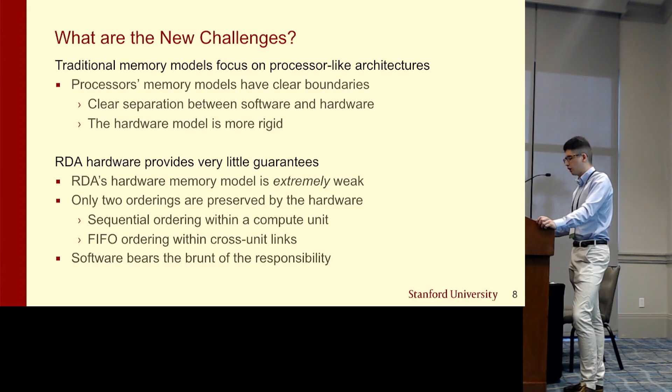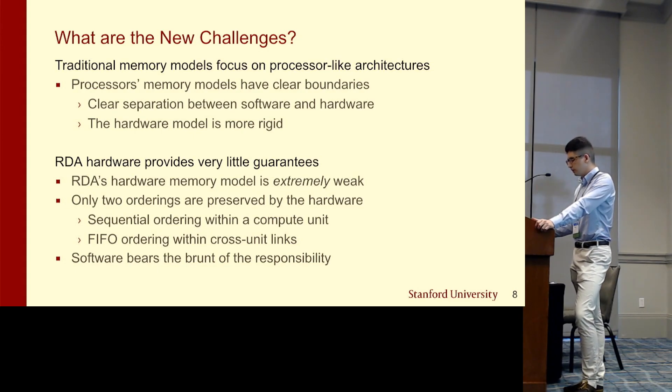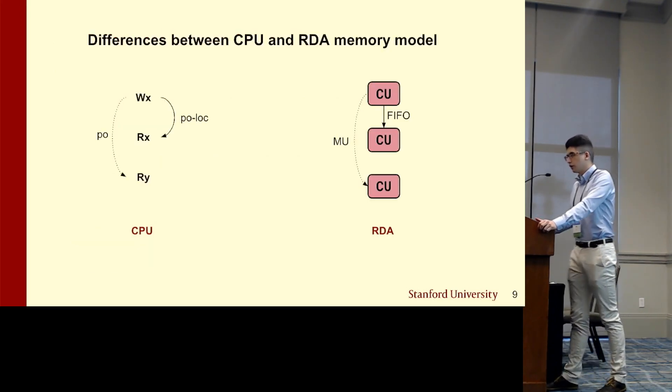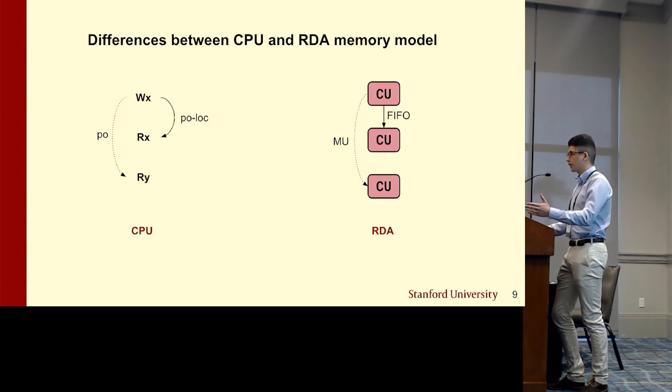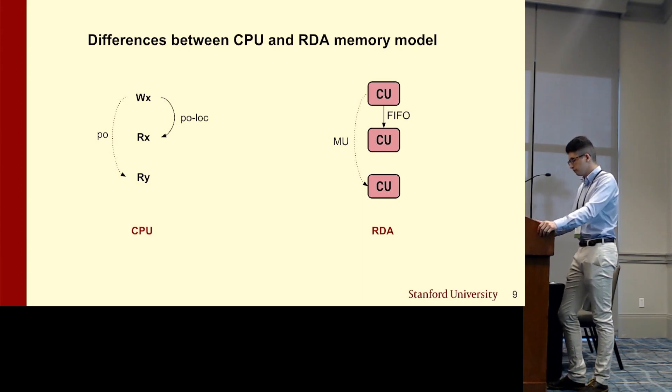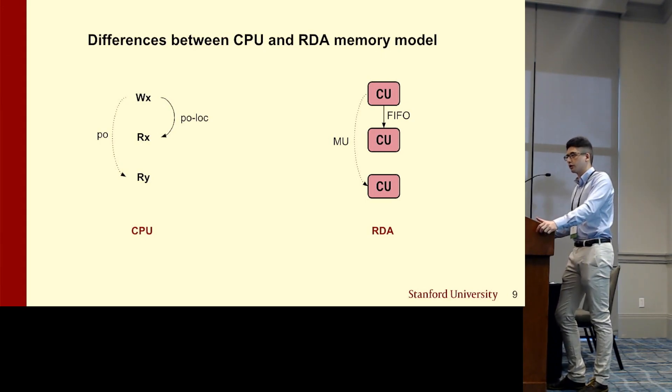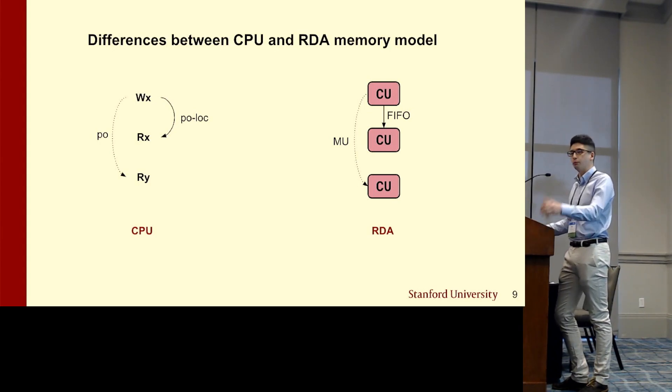The only ordering guaranteed by the hardware is sequential consistency within a single compute unit, and FIFO ordering within each link between two compute units. This leaves the software with enormous responsibility in terms of guaranteeing memory order correctness. Here's a pictorial illustration of the differences between CPU and RDA memory models. CPU memory models are generally concerned with the sequence of instructions in some given program order, and when their effects in memory are visible to other instructions. One example property preserved by the hardware is same-addressed program order, which is enforced by hardware-enforced coherence protocols.